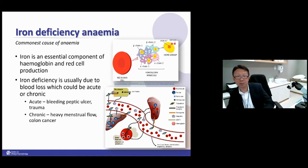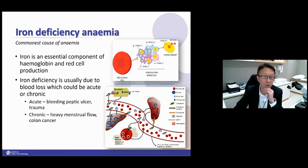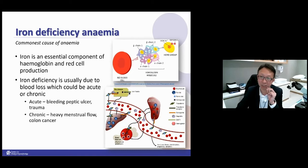The commonest blood disorder in this category is iron deficiency anemia — the commonest cause of anemia. Iron is very essential for the production of red cells and hemoglobin. As seen in the diagram, iron stays at the center of the hemoglobin molecule, which is contained within the red cell. Iron deficiency is mostly due to blood loss — either acute bleeding from peptic ulcer or trauma, or chronic bleeding from heavy menstrual flow or colon cancer.